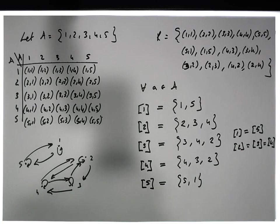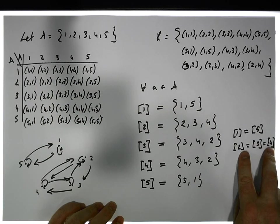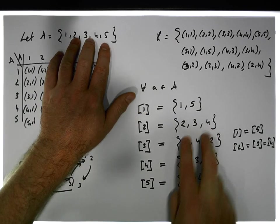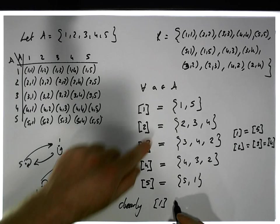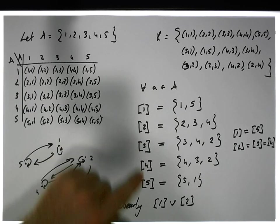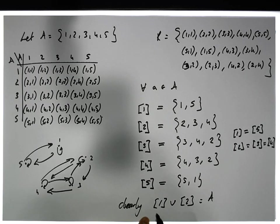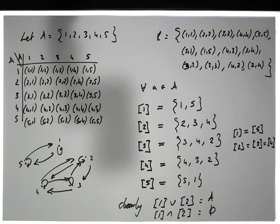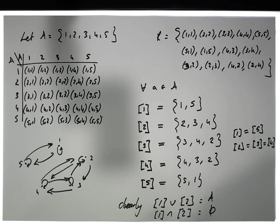More importantly, you can see that the set {1, 2, 3, 4, 5} is now broken up into these same classes: {1, 5} and {2, 3, 4}. When we union these together we get the set A. Clearly, the equivalence class of 1 unioned with the equivalence class of 2 — since 1 is related to 5, this is the same as the union of equivalence class 5 and equivalence class 2 or 4 — gives us A. The intersection of these two classes gives us the empty set. So we've shown that these equivalence classes form a partition of the set.